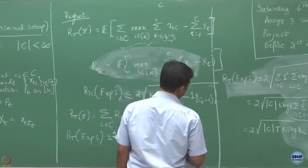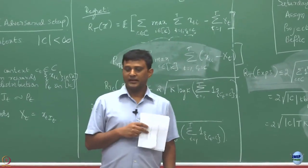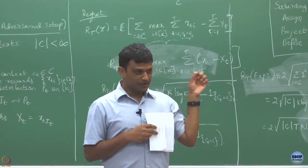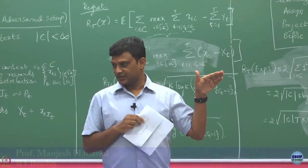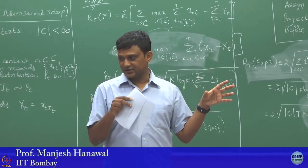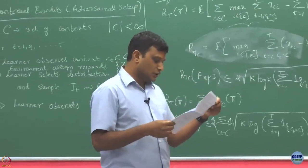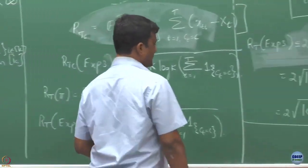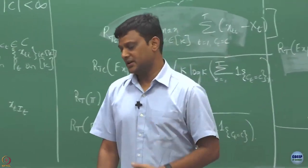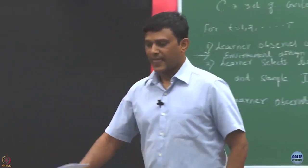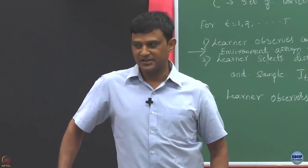What we are next going to see is: instead of focusing all the context, can we do some restriction on this context, or group this context, and then see whether we can get a better regret? Naturally, if this context is very large, maintaining a separate EXP3 algorithm or one algorithm for each context is a very costly affair.